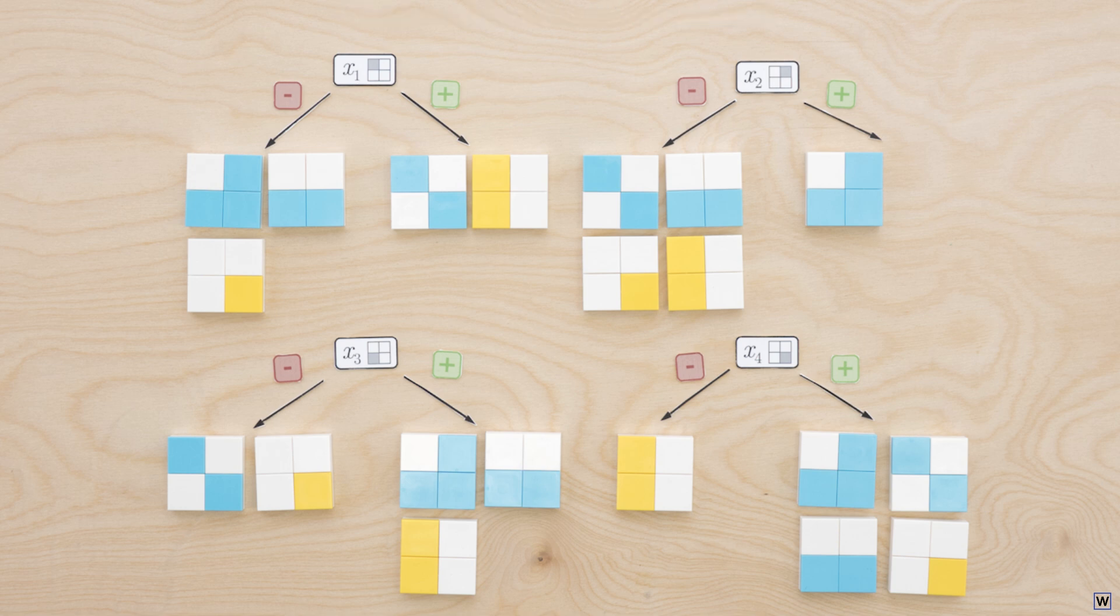After a little investigation, splitting on X4 may seem promising, as it seems to almost cleanly divide up our data. We can easily imagine completely separating our data with just one or two more splits. Of course, the key to the efficiency of our greedy approach is that we only consider a single level of our tree at a time. So we aren't allowed to make our decision based on what may happen further down the tree.